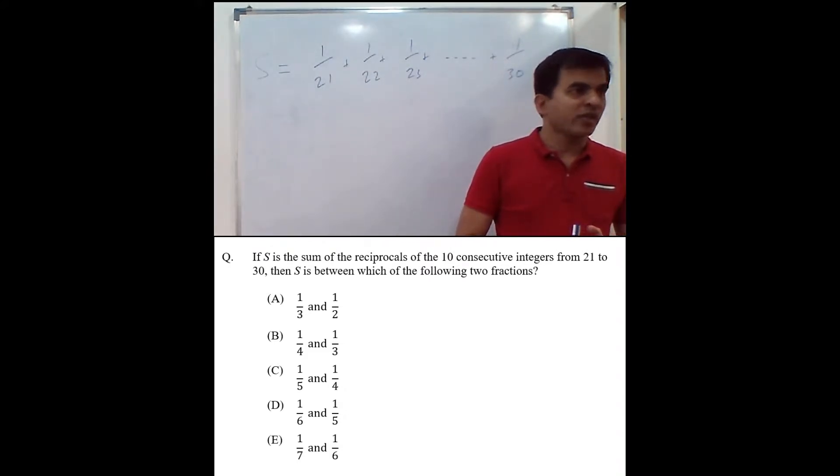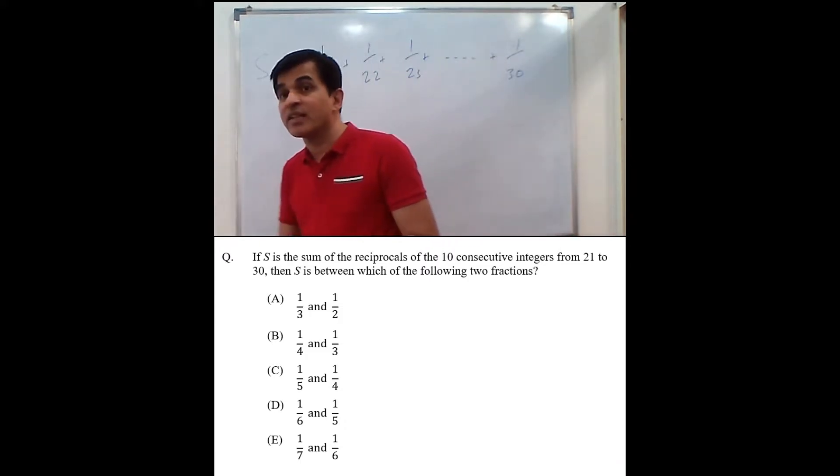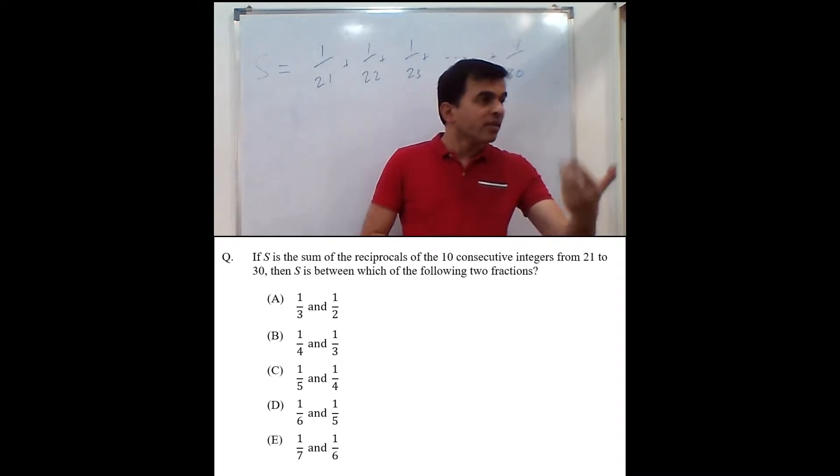This is the definition, which we are going to understand. S is the sum of the reciprocals of 10 consecutive integers, 21, 22, 23, 24. Reciprocals of that. I add it up to give you S.